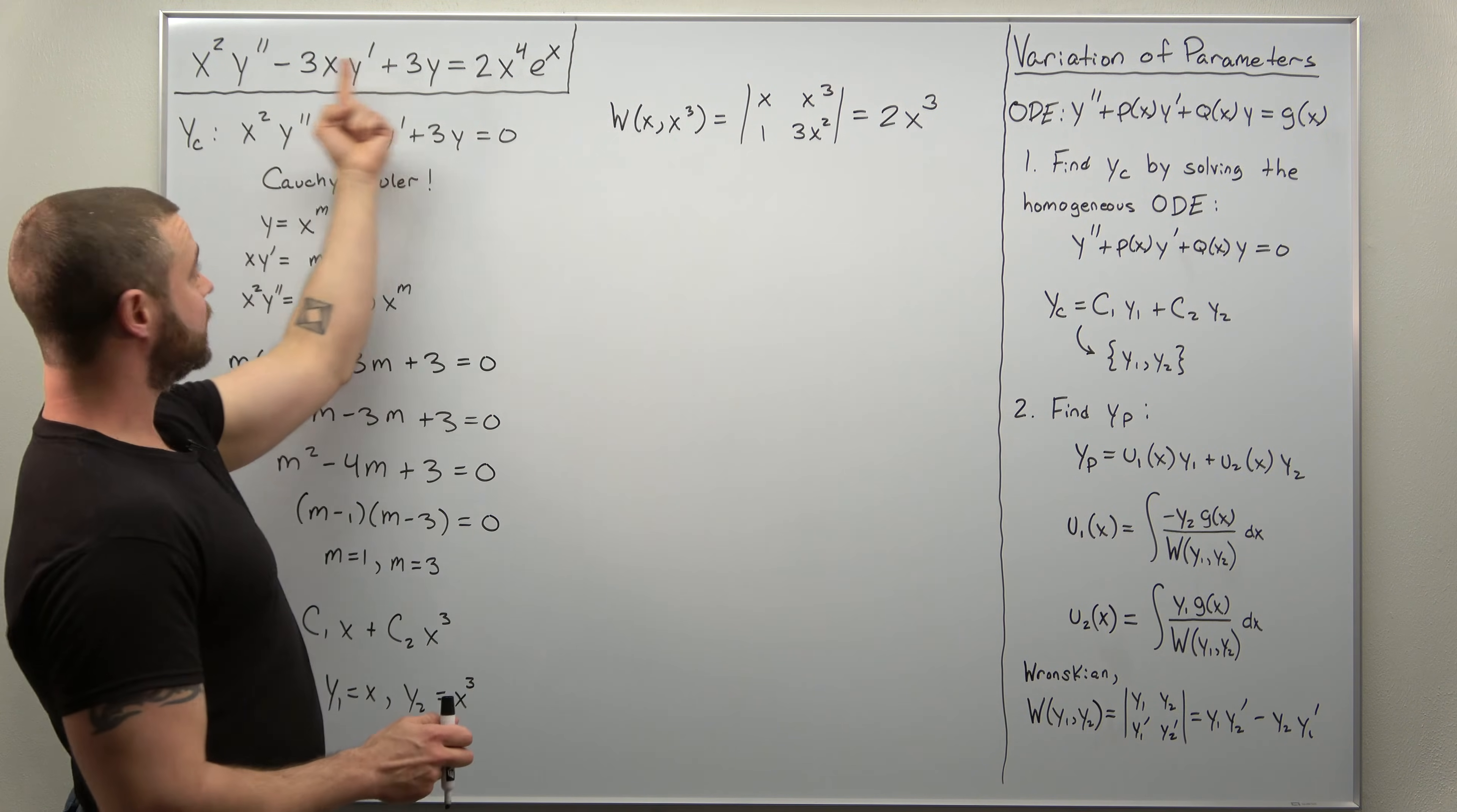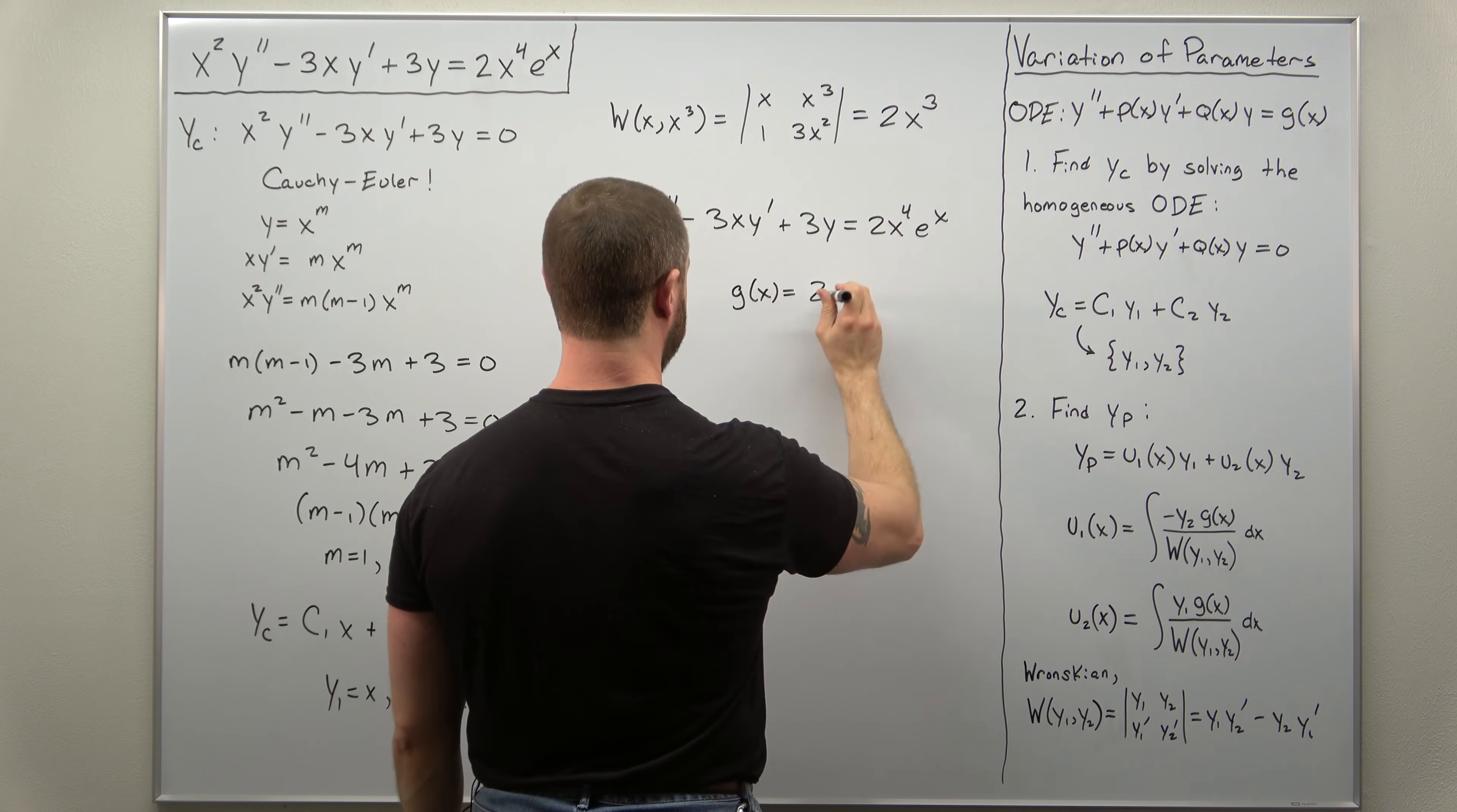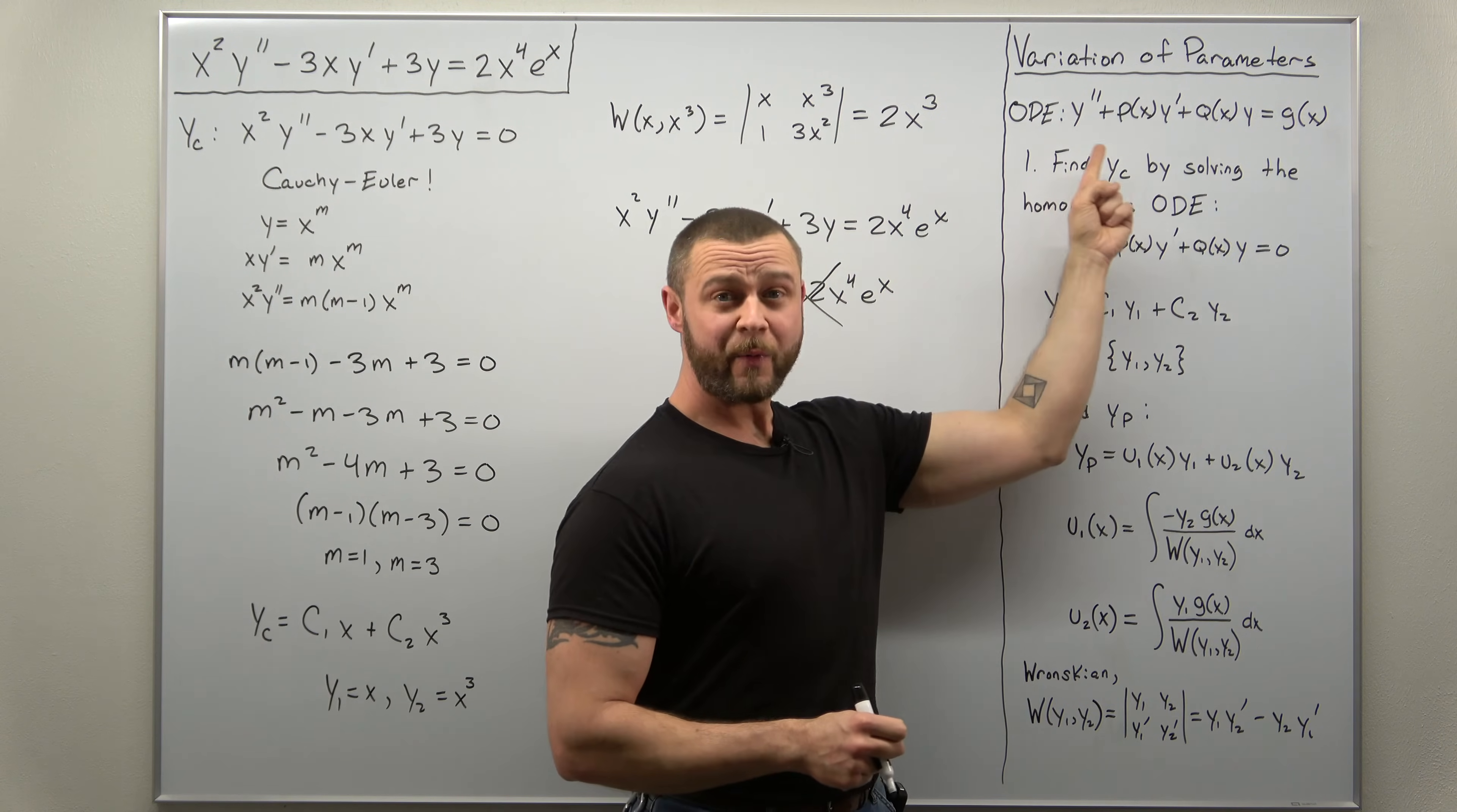So now if we take a look at our non-homogeneous ODE, let me just go ahead and write that down again. We have it as X squared Y double prime minus 3X Y prime plus 3Y equals 2X to the 4th E to the X. And we just look at our right-hand side and we identify this, that non-zero right-hand side as 2X to the 4th times E to the X. Right? No. So that is not the correct G of X. This is where the trick comes in. Be careful. The theorem from which we got these formulas for U1 and U2, let's go back to it. This is the details that you really need to pay attention to. Notice how we identify G of X here.